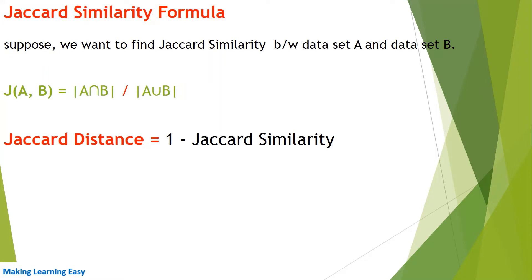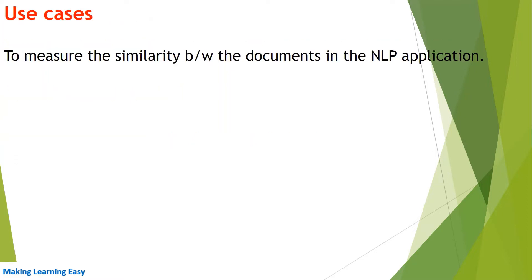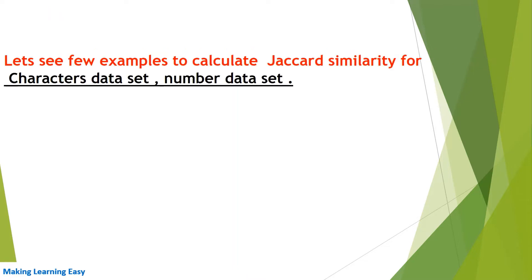If Jaccard similarity is 0.2, the Jaccard distance would be 0.8. The main use case of Jaccard similarity is to measure the similarity between documents in NLP applications or machine learning applications.